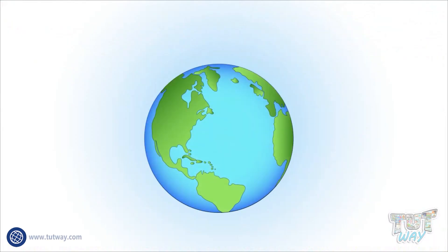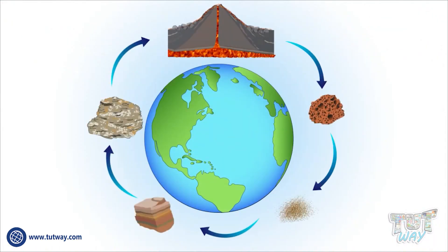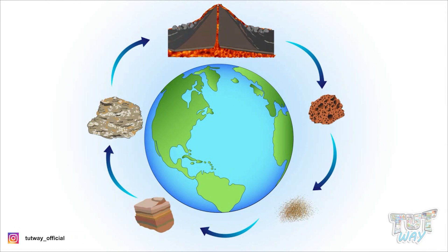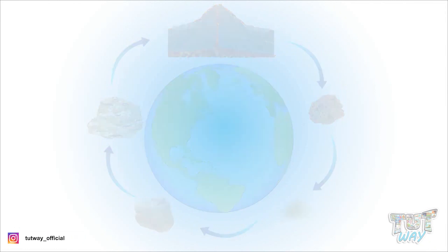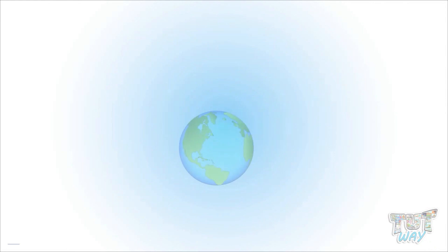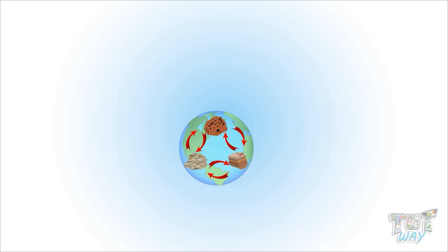Our earth's crust constantly changes. Three types of rocks are found on the earth: igneous rocks, sedimentary rocks, and metamorphic rocks. And all these types of rocks change to other types of rocks. And this is what we call the rock cycle.